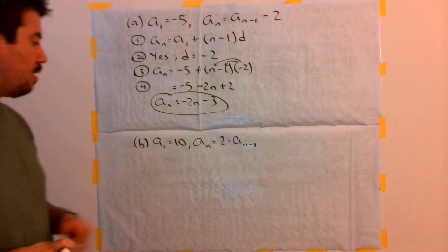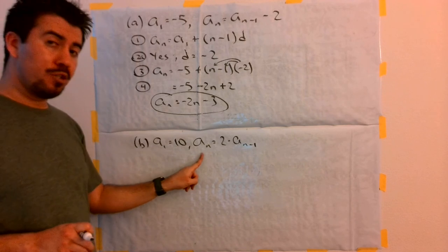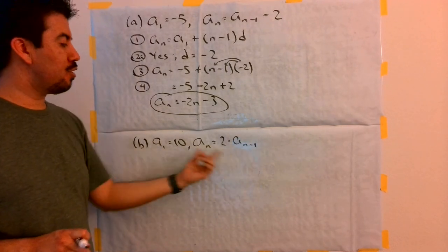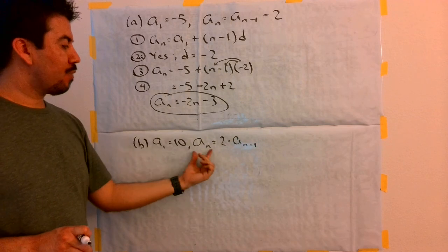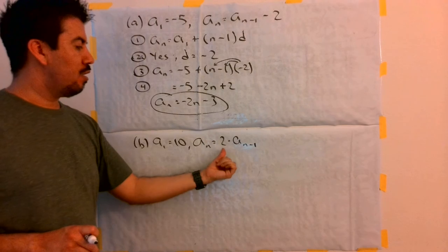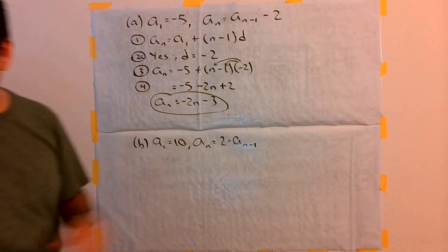That covers letter a. Let's do problem letter b. We're given a1, our first term, is equal to 10, and then the recursive rule, a of n, is equal to 2 times a of n minus 1. So, for any term in a sequence, we get the previous term in connection with multiplying it times 2.